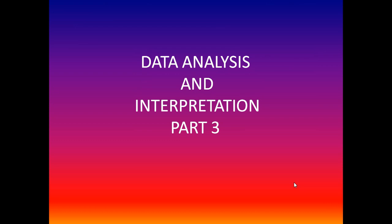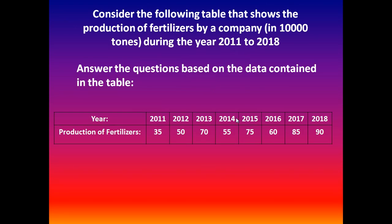Hello my dear friends, welcome to my YouTube channel. Today I am going to describe data analysis and interpretations part 3. Consider the following table that shows the production of fertilizers by a company in 10,000 tons during the year 2011 to 2018. Answer the questions based on the data content in the table. There are eight years given and corresponding production values.